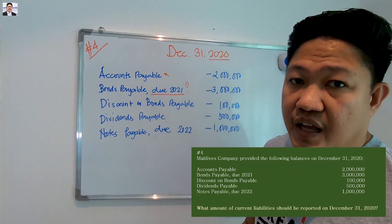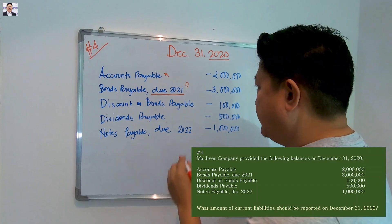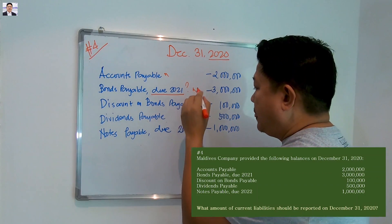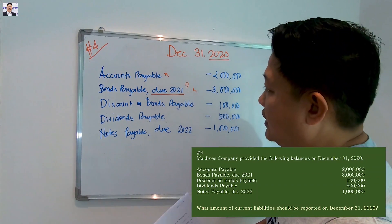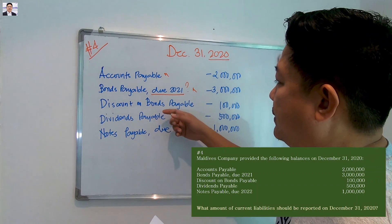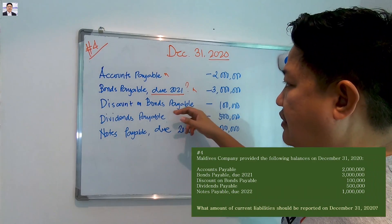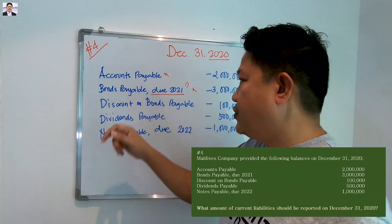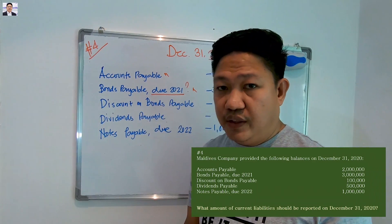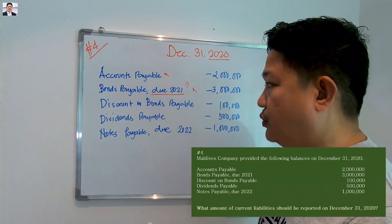Discounts on bonds payable — this is related to the bonds payable due June 2021. We have to deduct this for the payment, so we include it accordingly.